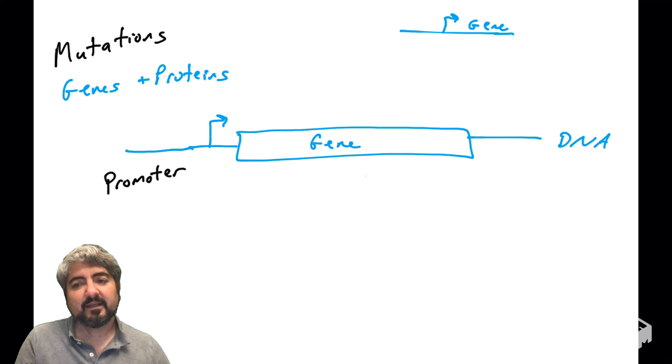The promoter region is that region of DNA upstream of a gene. Proteins bind the promoter region to regulate the transcription of the gene. What are those proteins called? They're called transcription factors.